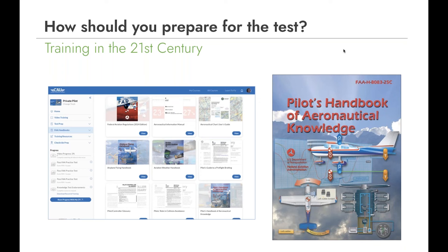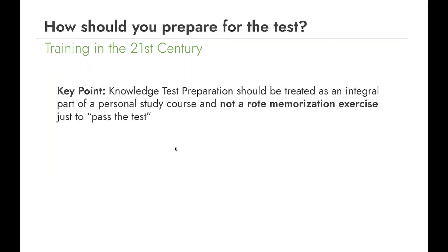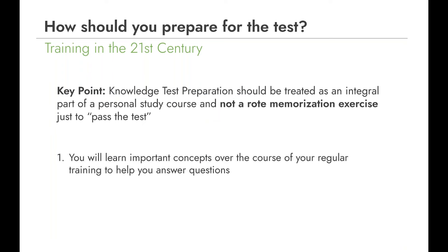A big part of the test content comes from the FAA handbooks. The ACS sets the outline, and the actual study material comes from those handbooks. I don't recommend reading them cover to cover; instead, go through the video course first, then supplement your knowledge with specific parts of the Pilot's Handbook of Aeronautical Knowledge, the Airplane Flying Handbook, and the Aviation Weather Handbook. The study tools include links back to each pertinent chapter for each question, and all these books are included digitally in the Learn to Fly course.